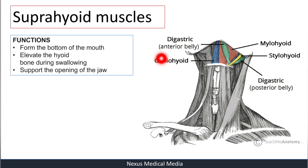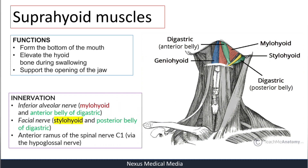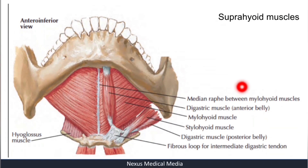They also support the opening of the jaw. Regarding innervation of these muscles: the inferior alveolar nerve innervates the mylohyoid and the anterior belly of the digastric muscle; the facial nerve innervates the stylohyoid muscle and the posterior belly of the digastric; and these muscles are also innervated by the anterior ramus of spinal nerve C1 via the hypoglossal nerve.